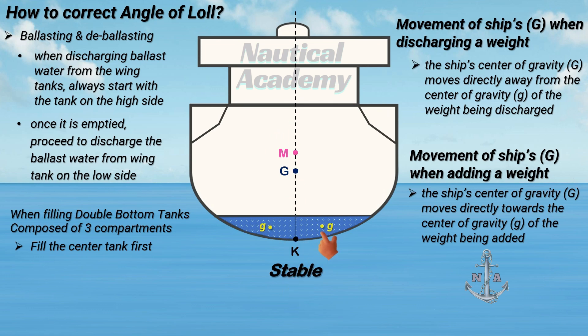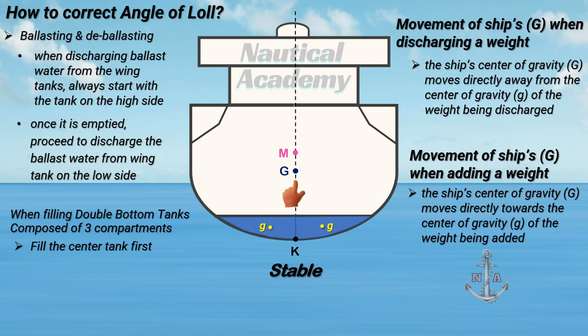We can find the tank's vertical center of gravity, or VCG, on the ship's tank sounding table on board. Be sure that when doing this procedure, you are familiar with the movement of the ship's center of gravity during adding, discharging, and shifting weights on board. That's all for now — I hope you found this video helpful. See you next time, thank you for watching.